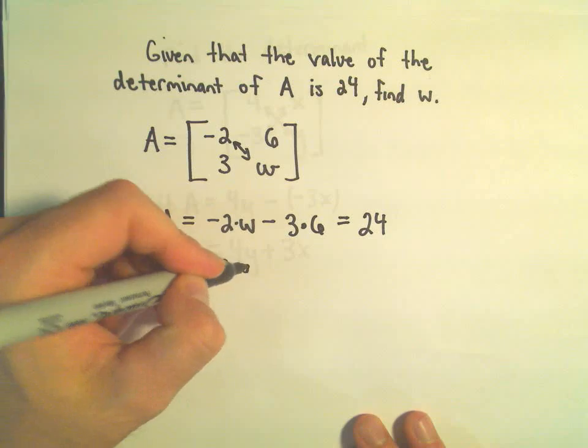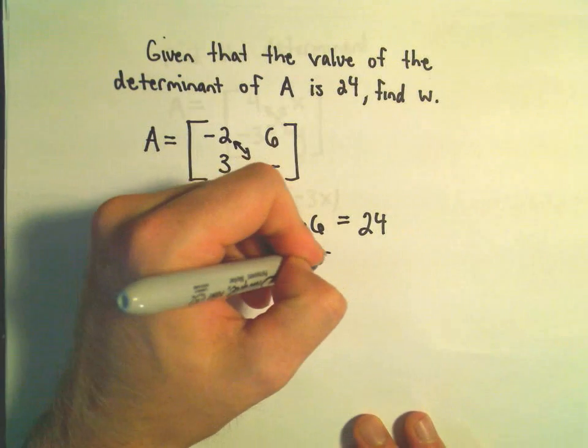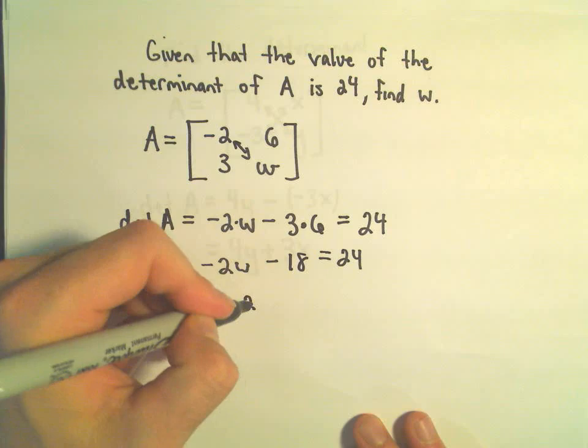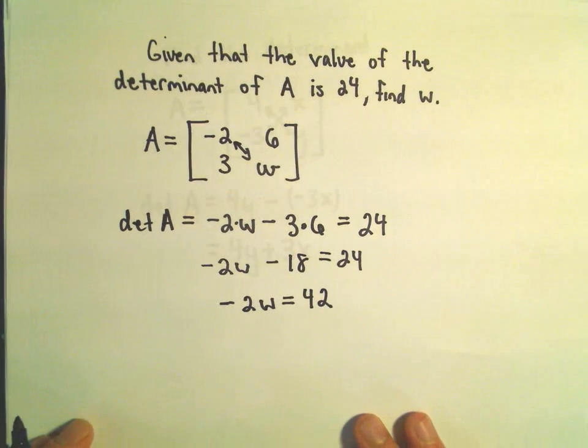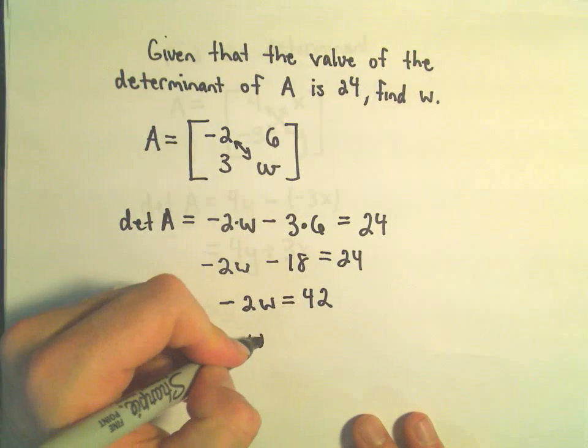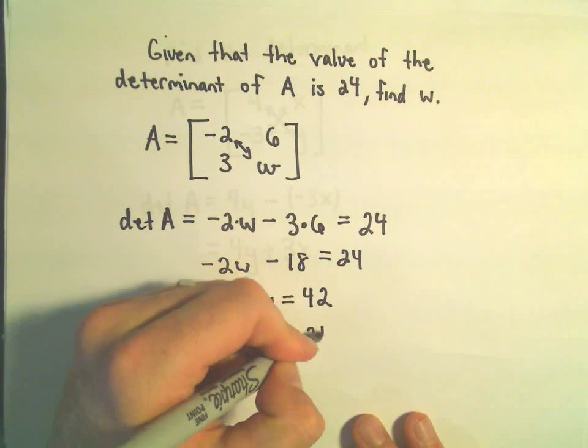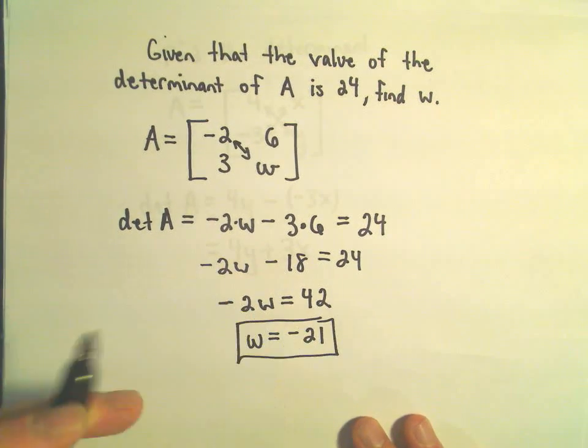This is negative 2w minus 18 equals 24. Well, we can add 18 to both sides. If we add 18, we'll get positive 42 on the right. If we divide both sides by negative 2, we'll be left with w equals negative 21.